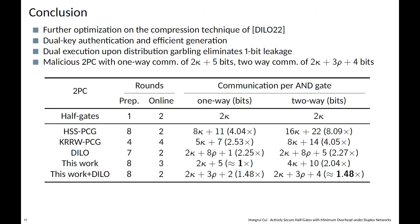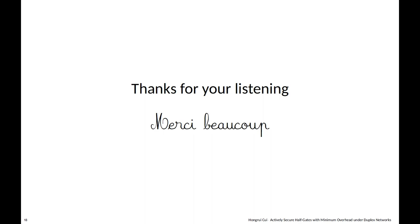In summary, we optimized the DILO protocol using dual key authentication and dual execution. As the main result, we achieve 2κ + 5 bits of one-way communication. By combining our preprocessing protocol with the DILO online protocol, we get 2κ + 3ρ + 4 bits of total communication. That concludes my talk, thanks for listening.